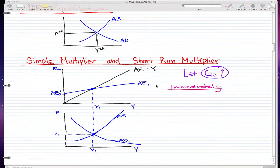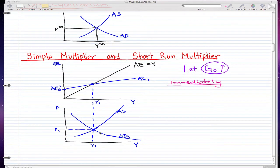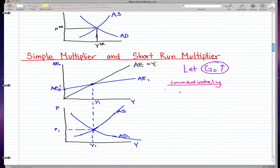Right away I'm going to bring you to simple multiplier and short run multiplier. This is where we have to pay attention because it's extremely important for you to know this. We're going to start off with the assumption that the government increased their spending, so G₀ increased.